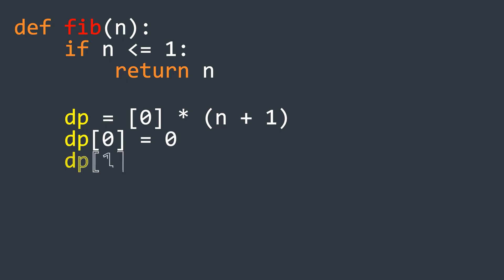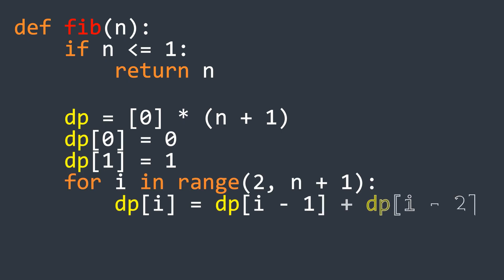The code for this approach is simple. First we define the function that takes n as input. Then we check the base case as usual. Next we initialize an array and set its 0th and first index elements to the base case values. And after that we run a loop starting from the second index onwards, updating each value by adding the previous two elements. Finally, we return the value at index n which gives us the Fibonacci number for that position.